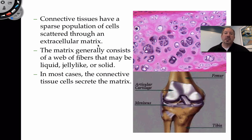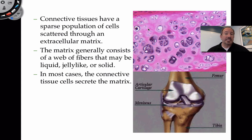The matrix generally consists of fibers — often protein, but there can be some carbohydrate. In the case of blood, which is connective tissue, the matrix is called the plasma. It's very aqueous — very watery — with some proteins, sugars, amino acids, hormones, and a lot of other things.